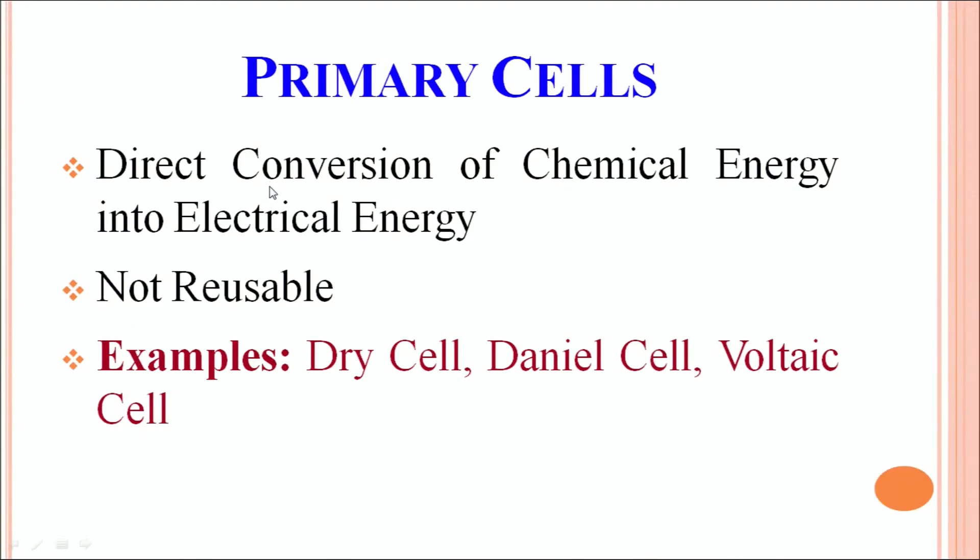What are primary cells? Primary cells involve direct conversion of chemical energy into electrical energy. You cannot use them again, and the examples of primary cells are dry cells and Daniel cells.